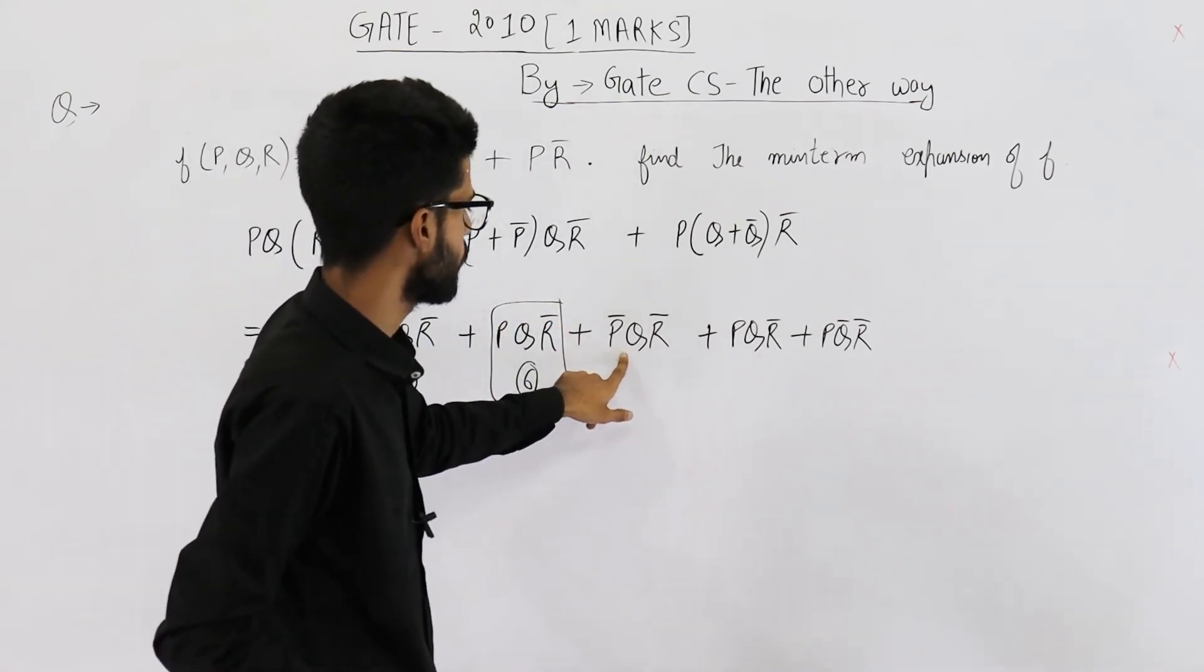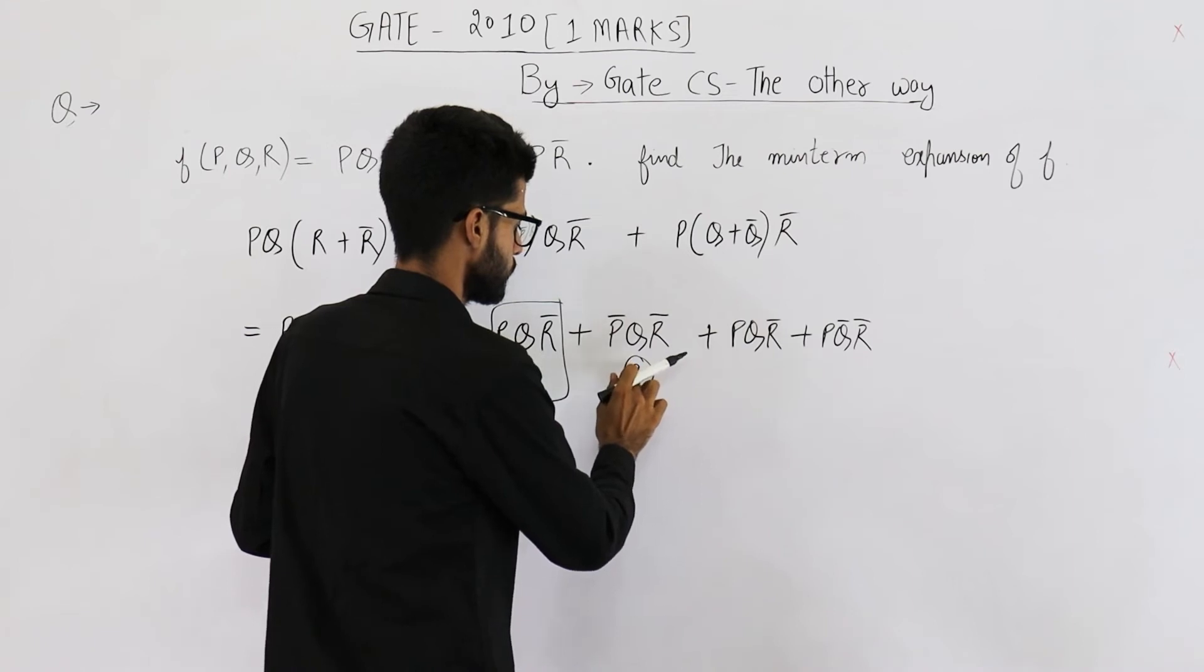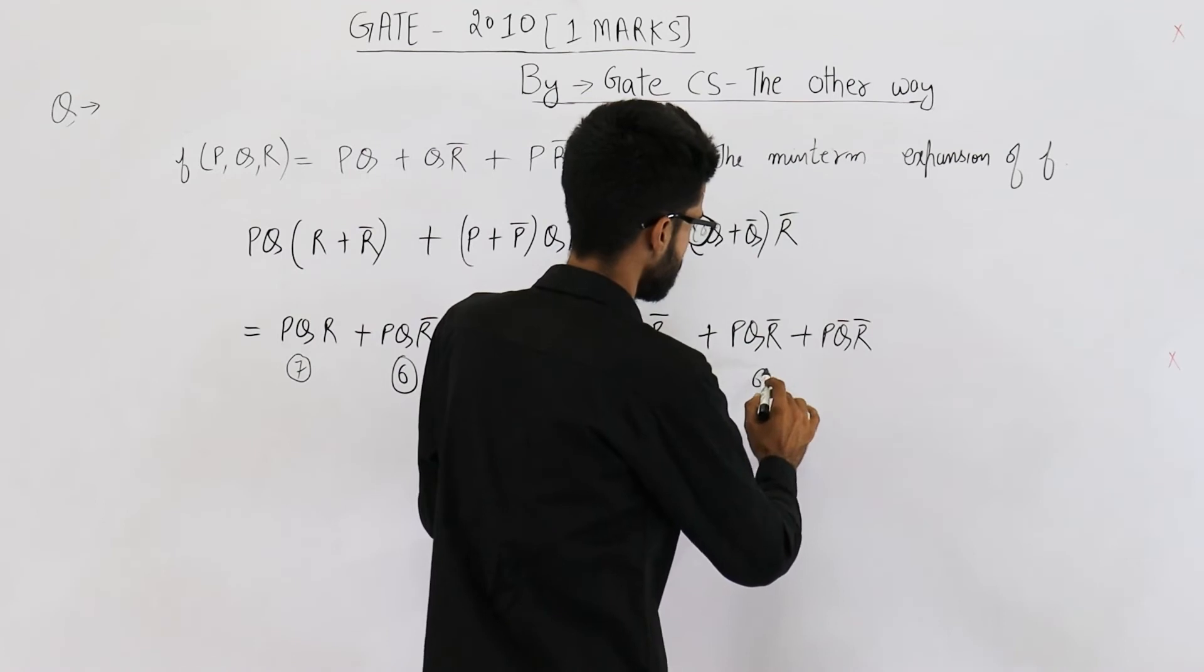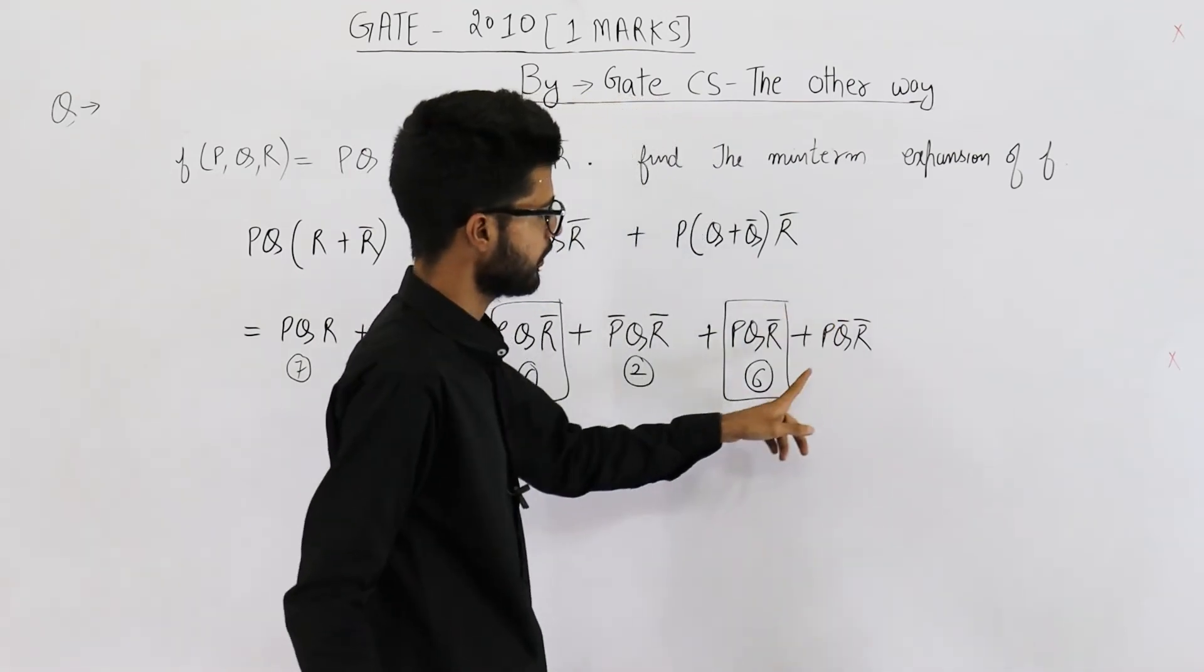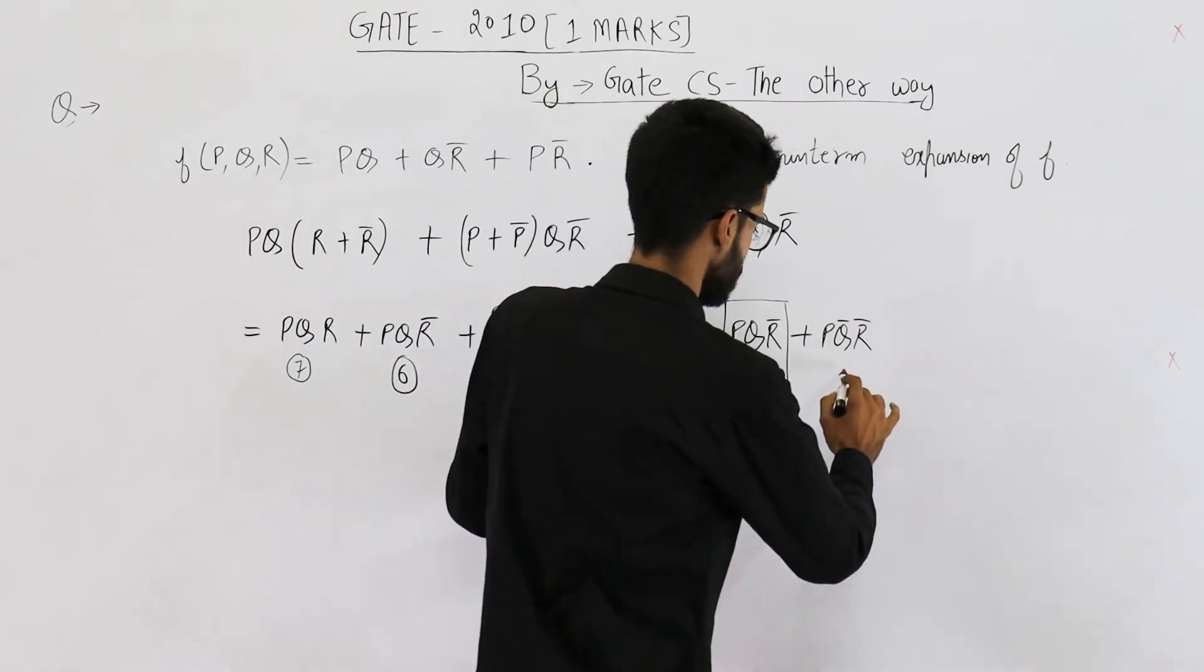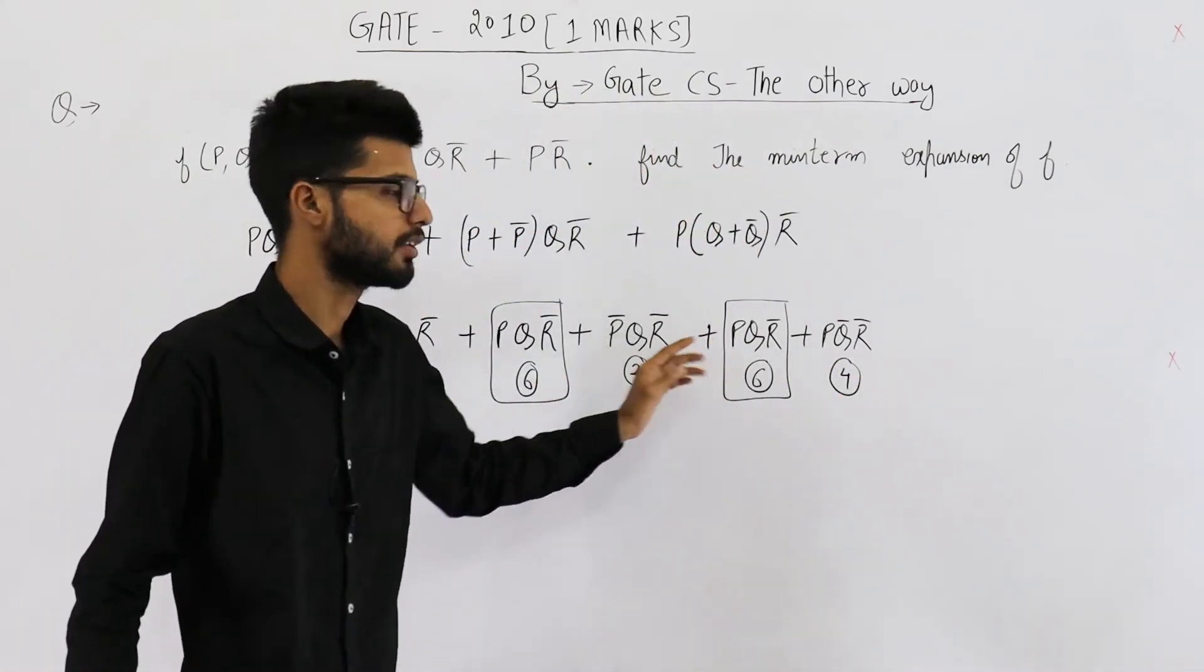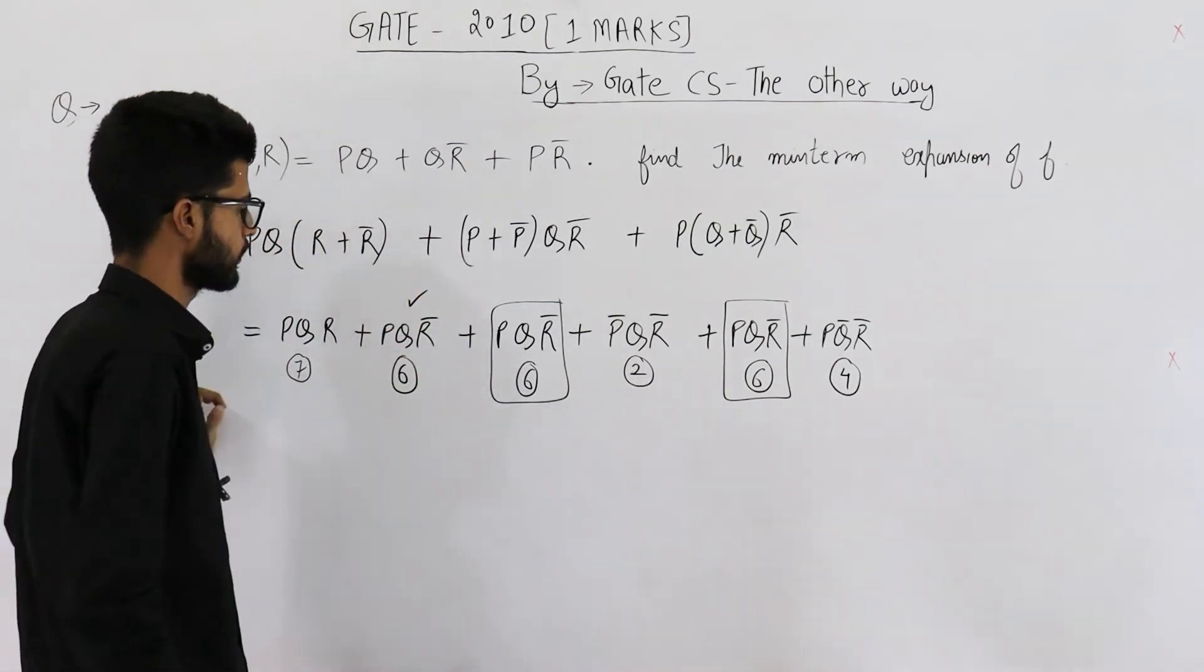This one is zero one zero. So this is two. This one is one one zero it is six again. And this is one zero zero which is four. So don't count these two again and again because it's already counted here.